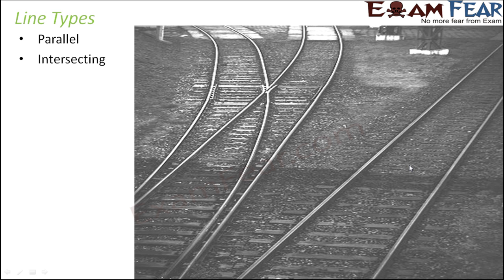Here on the screen you see the railway tracks. At certain points, you see that these two railway lines intersect each other — they cross over and pass over one another. That is an example of intersecting lines. Whereas in certain cases they always run parallel with each other, meaning the distance between the two lines always remains the same. That is an example of parallel lines.